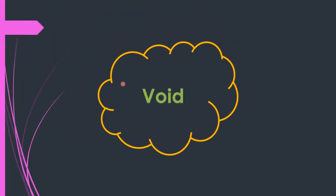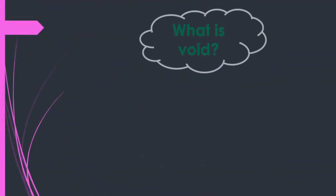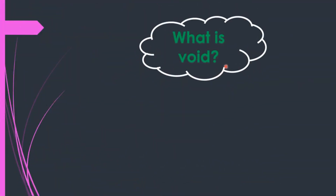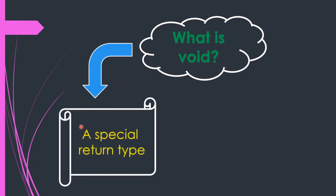Now let us study about void, the last topic of this video. With this topic we will finish the user-defined methods topic, and in the next video we will start a new topic. Void is a special return type. Return type defines the data type of the value that we get in return after the execution of a method.